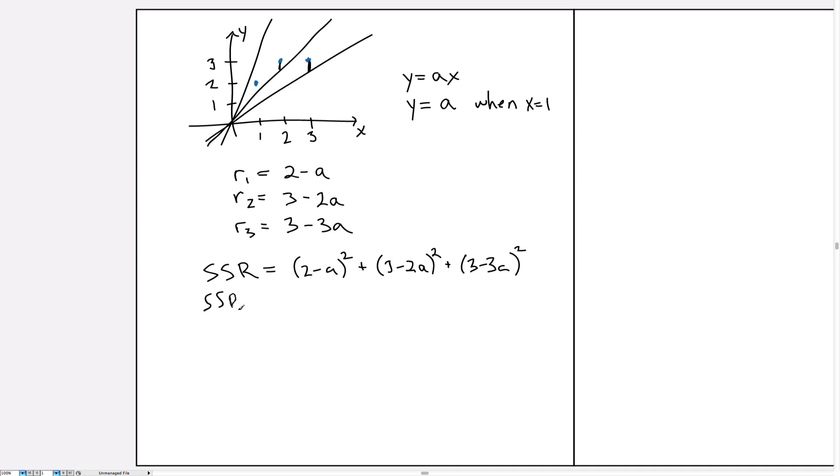So let's first just write out the SSR and now explicitly state this as a function of A. And this will be 4 minus 4A plus A squared plus 9 minus 12A plus 4A squared plus 9 minus 18A plus 9A squared. Now let's keep in mind where these numbers came from because it's going to be helpful in figuring out the formula we need later. Now we just take a derivative of this quantity, SSR prime of A, and we get minus 4 plus 2A minus 12 plus 8A minus 18 plus 18A.